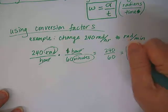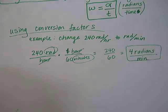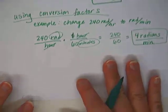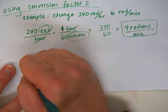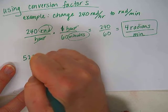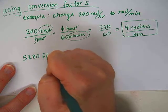And then I keep the units that did not cancel out. So what are the units that are left over? 4 radians or rads. You can just write it that way. Per minute. Do you understand what I mean by using conversion factors?